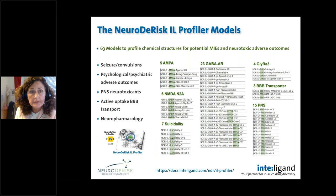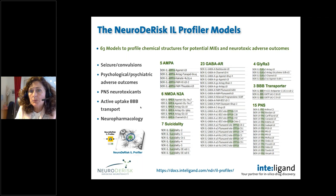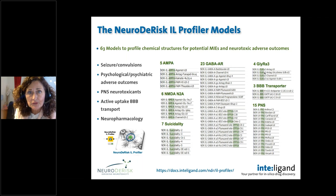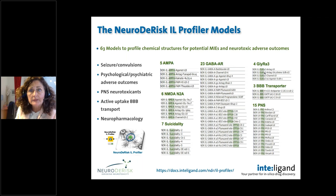During this four-year project, we developed 63 models to profile chemical structures for neurotoxic adverse events, covering all important outcomes designated in the project: seizures and convulsions, psychological and psychiatric effects, PNS neurotoxicants, active uptake and blood-brain barrier transport. For neuropharmacology, AMPA and NMDA receptors, GABA-A receptors, and glycine receptor alpha-3 receptors are all strongly connected. It's very interesting not only to assess molecules for adverse effects but also their pharmacology, helping us prioritize compounds for research related to molecular initiating events, key events, or adverse outcome pathways.